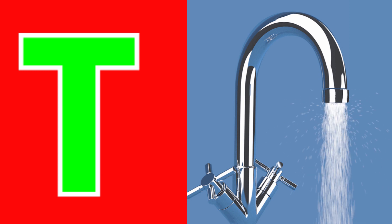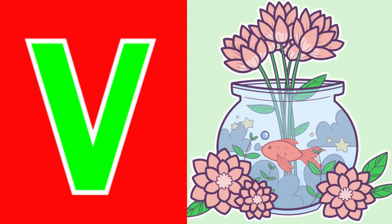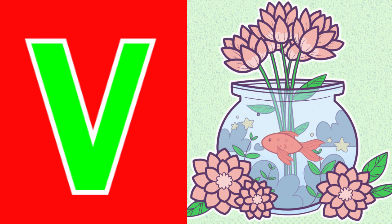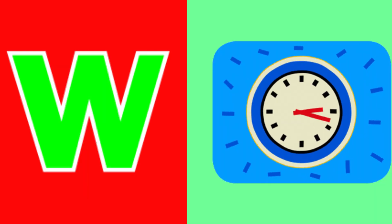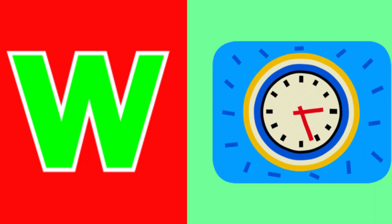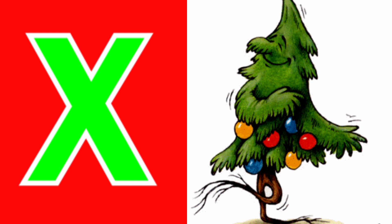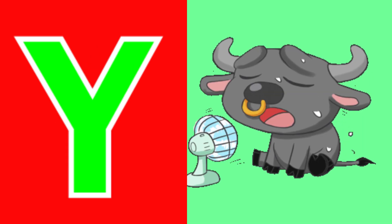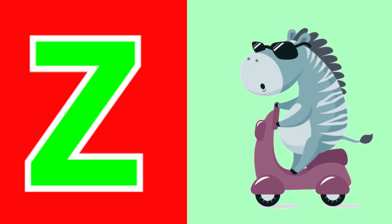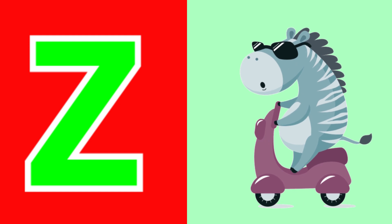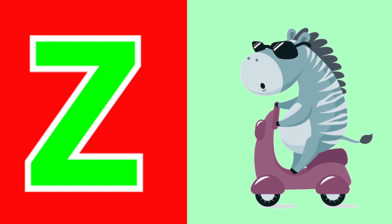U for Umbrella, V for Vase, W for Watch, X for X-mas Tree, Y for Yacht, Z for Zebra.